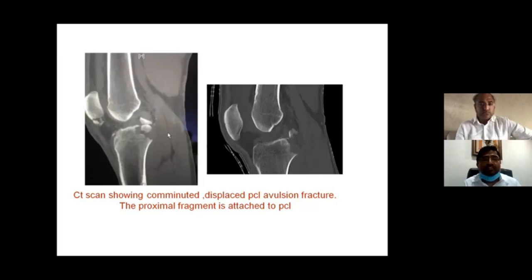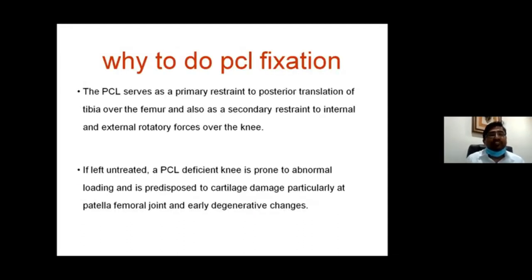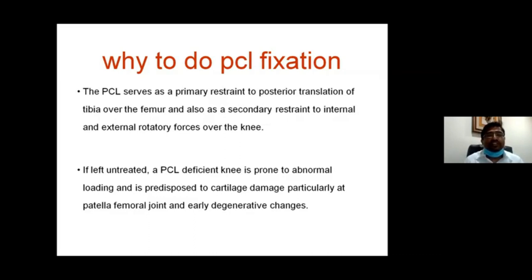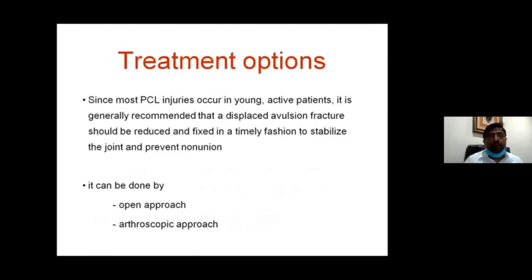When we get an X-ray, we immediately try to determine the amount of displacement in the avulsion and what type of combination is present. The PCL serves as the primary restraint of the posterior translation of the tibia relative to the femur, and is the secondary restraint to internal rotation and extension division forces on the knee. If left untreated, it leads to cartilage degeneration, especially patellofemoral changes.